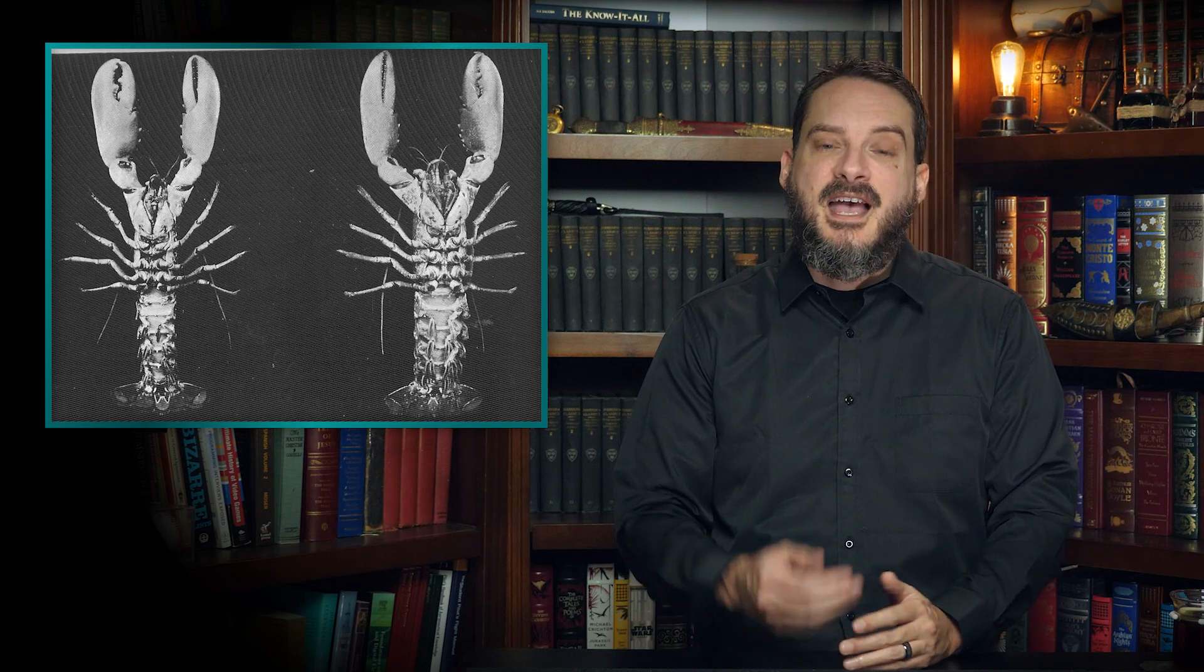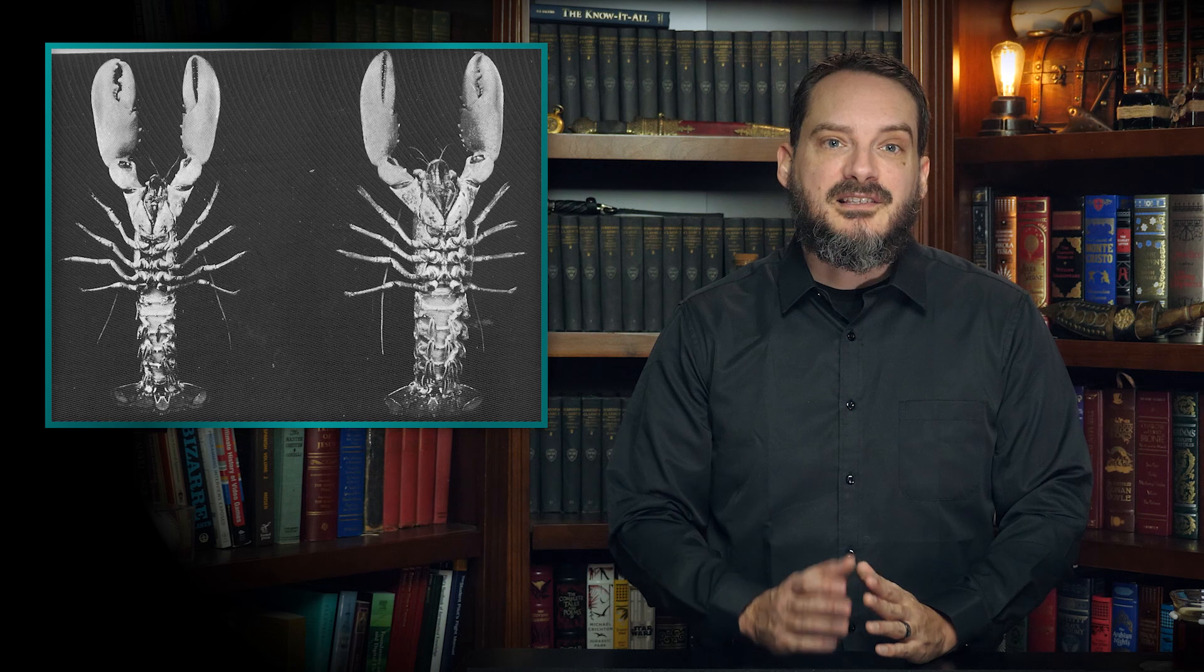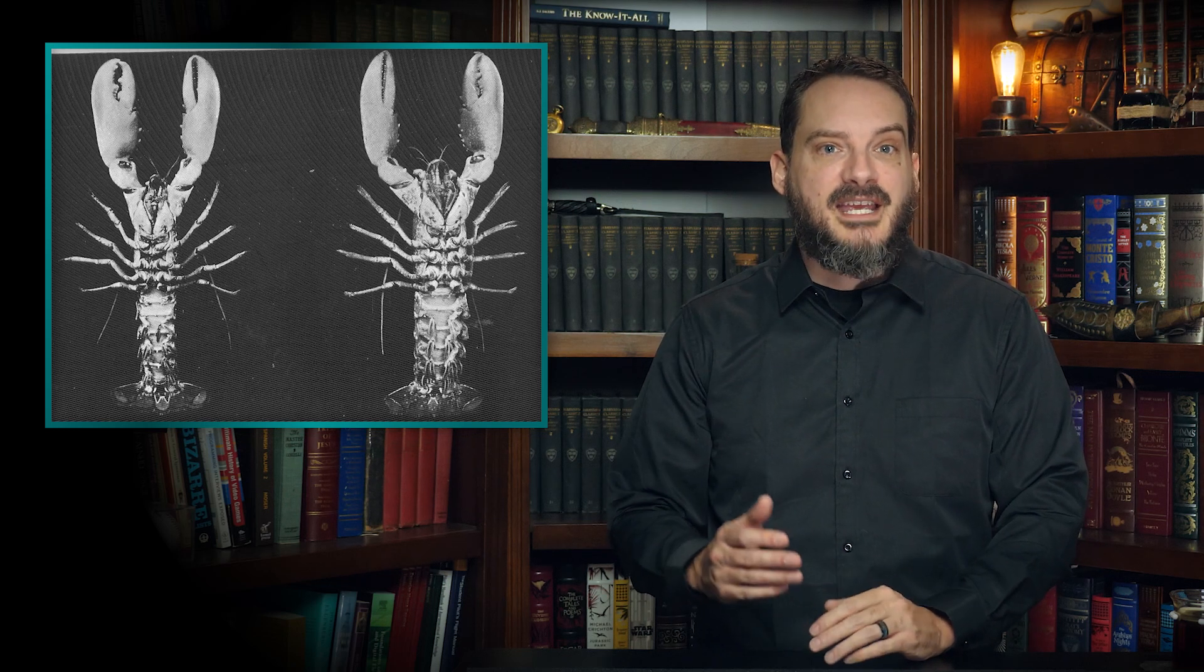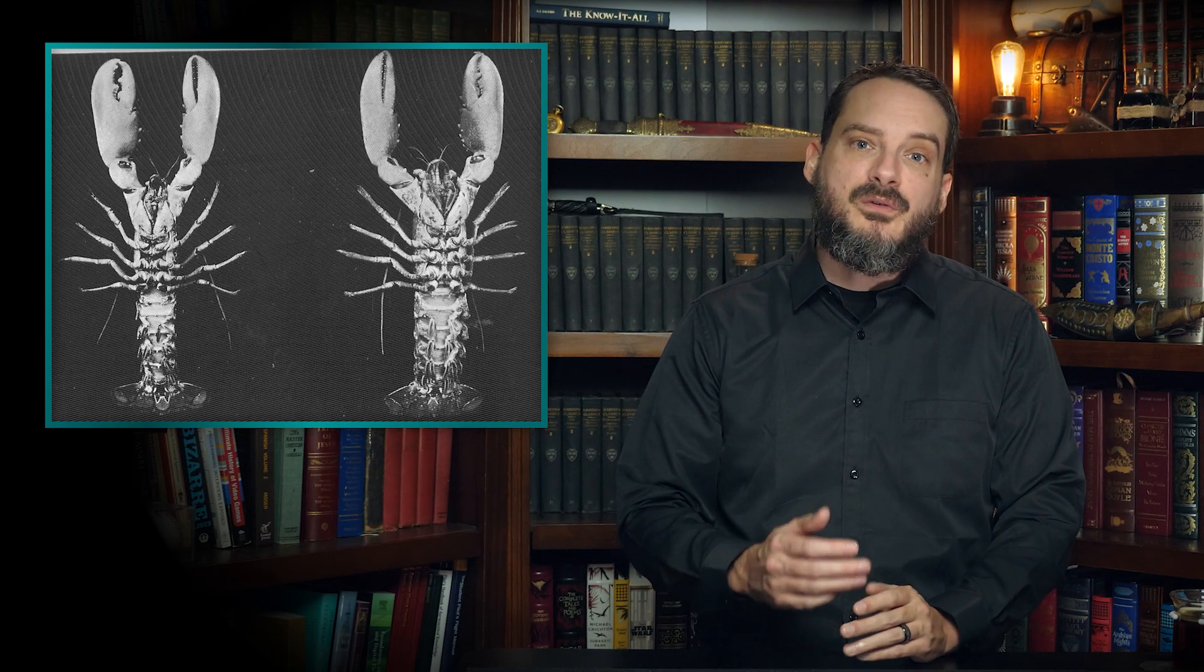A young lobster may molt several dozen times before its first birthday as it rapidly grows. The process slows to about once a year by around age seven, and then once every two or three years after that. The largest lobster ever caught weighed in at a whopping 44 pounds. For reference, a typical lobster you'll find in the store or restaurant usually rings in at about one to two pounds and is around five to ten years old.